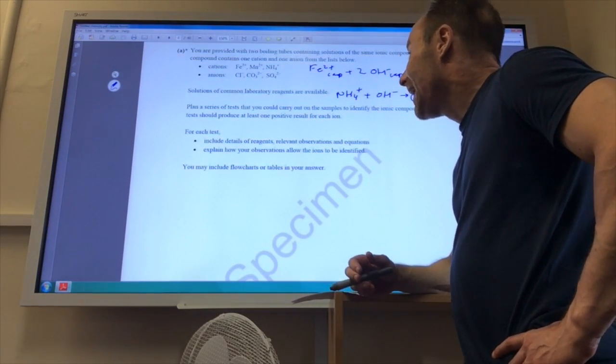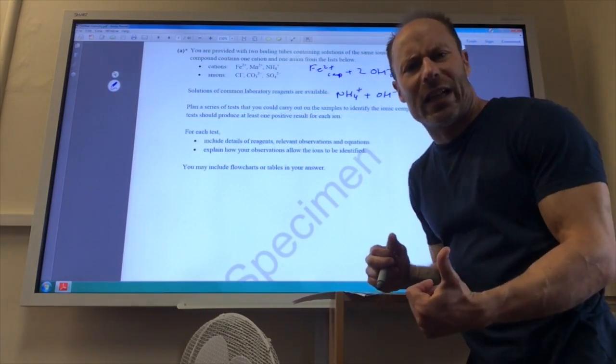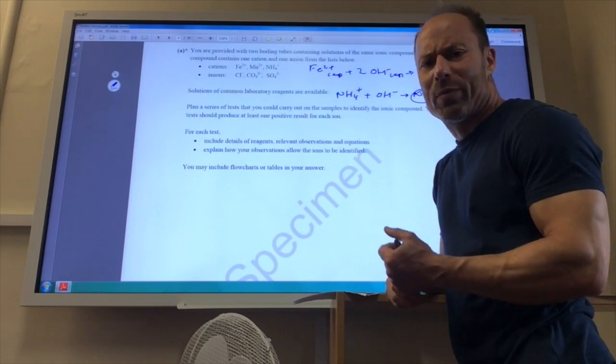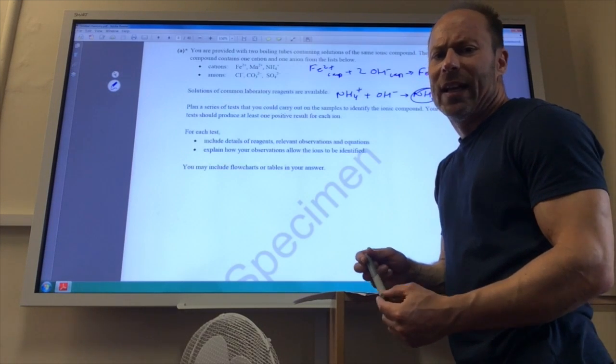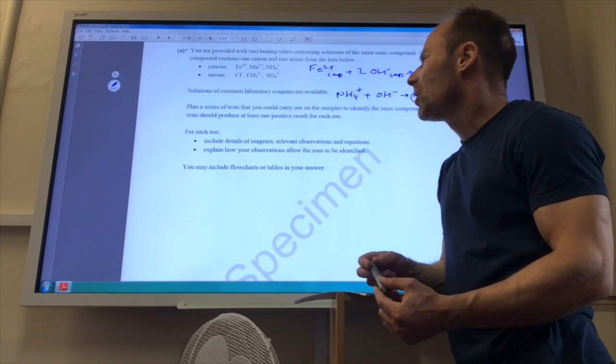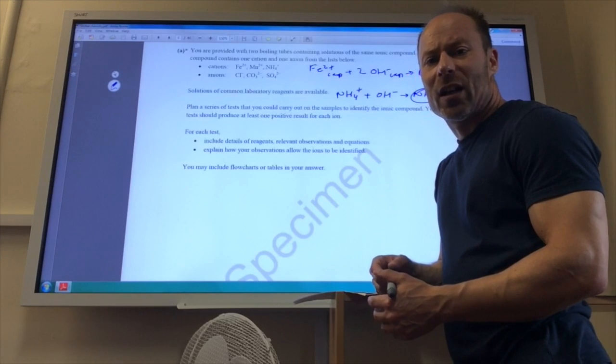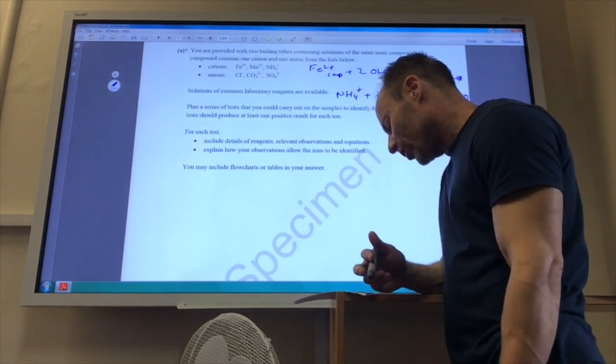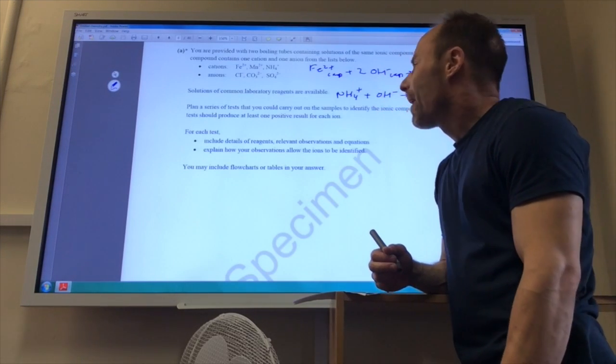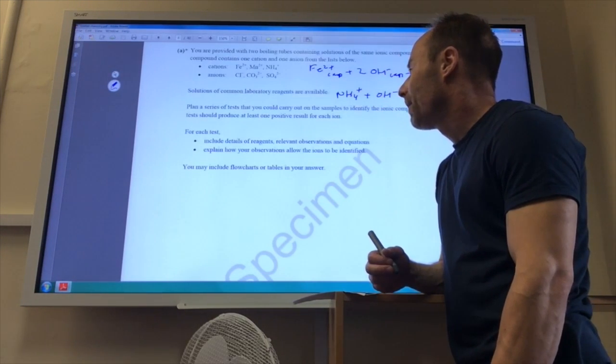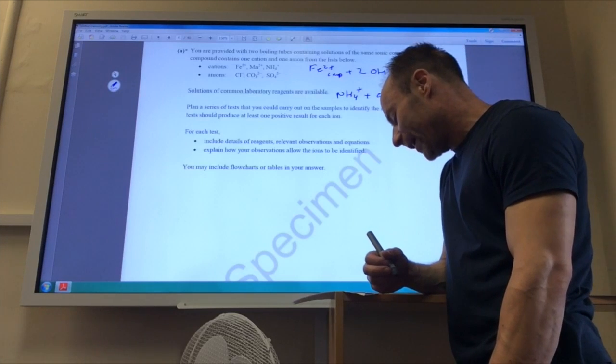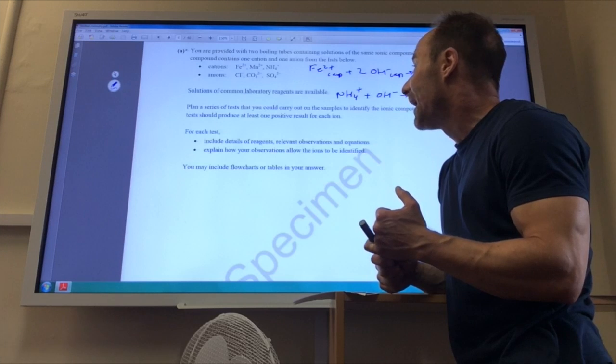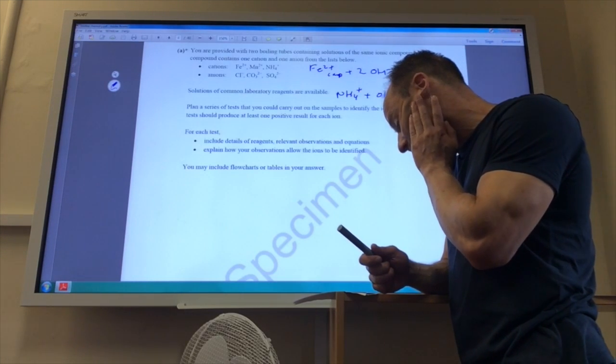For the anions test, for the chloride ion, you should know this by now. Chloride, you use silver nitrate and you will see a white precipitate which will dissolve in dilute ammonia solution. Carbonate ion. A carbonate ion will react with an acid. So you can use nitric acid and it will fizz. And that will identify your carbonate ion. And your sulfate ion.